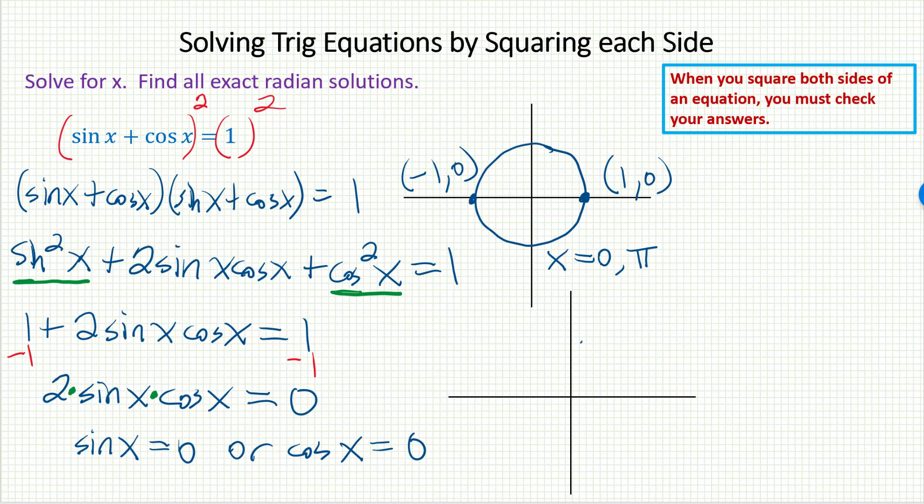For the cosine equation, I'll also go to the unit circle. Now I want an A coordinate of zero. Well, that happens here up at the top and here down at the bottom. So my two angles that I've ended up with in this picture would be 90 degrees π/2, and then down at the bottom 270 would be 3π/2. So I've ended up with four possible solutions, four solutions that are within one period.